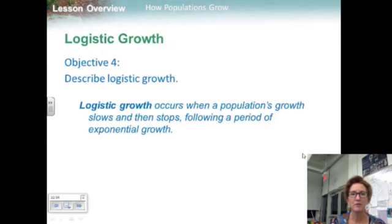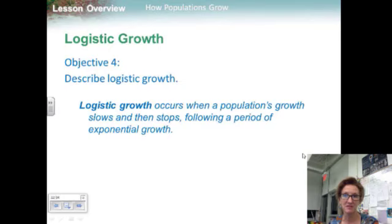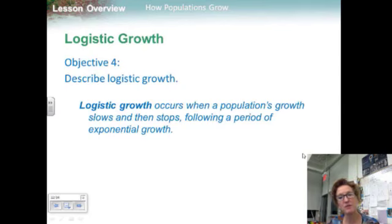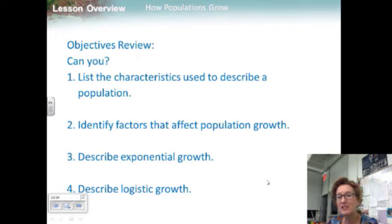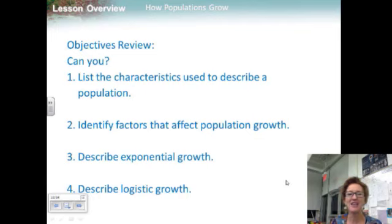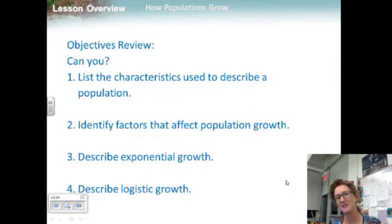Objective four was to describe logistic growth. Logistic growth occurs when population growth slows and then stops, following a period of exponential growth. Population growth may slow if the birth rate decreases or the death rate increases, or both. In addition, growth may slow if the rate of immigration decreases and the rate of emigration increases. So ask yourself: can you list the characteristics used to describe a population? Can you identify factors that affect population growth? Can you describe exponential growth and logistic growth?